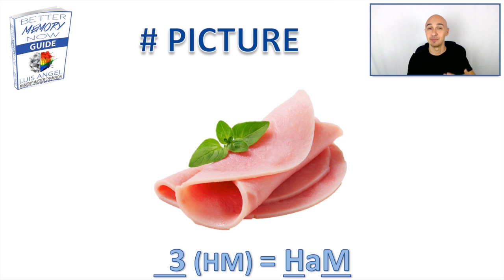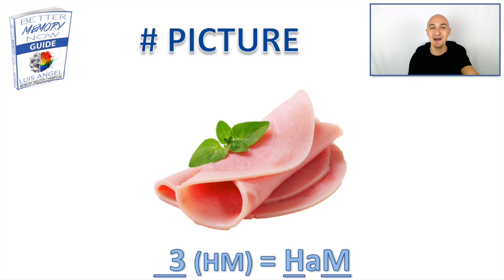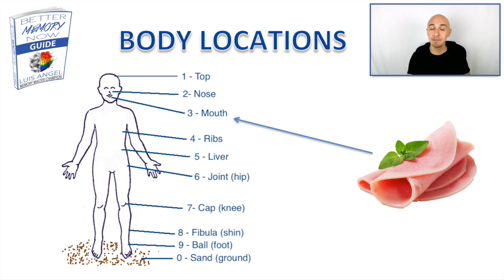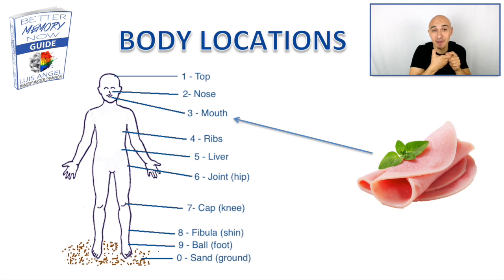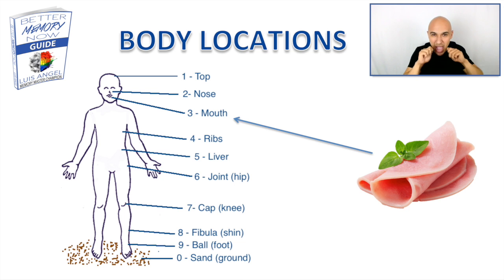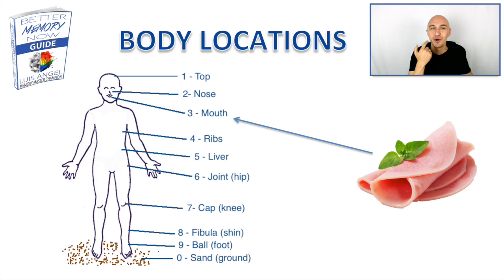Number three is ham. Three has the M sound, with an H in the beginning — so you get ham. Picture ham on your mouth. Maybe you're biting into a big piece of ham or slices of ham, and it gets stuck all over the rim of your mouth.